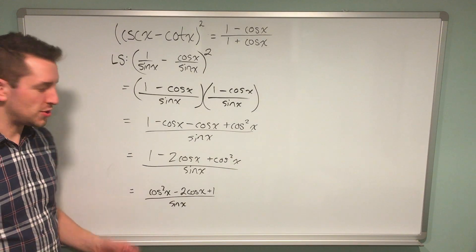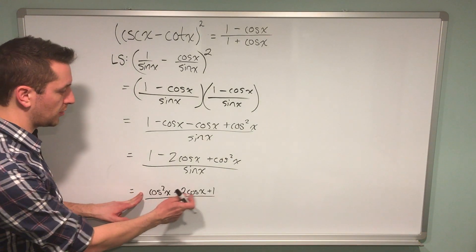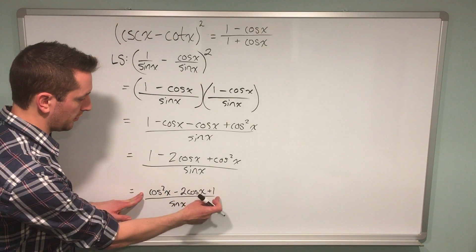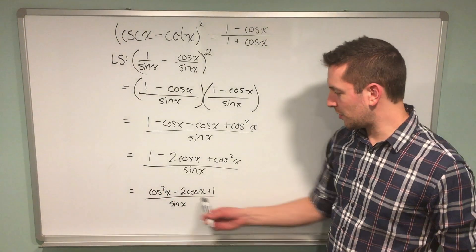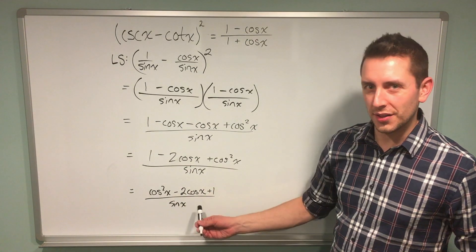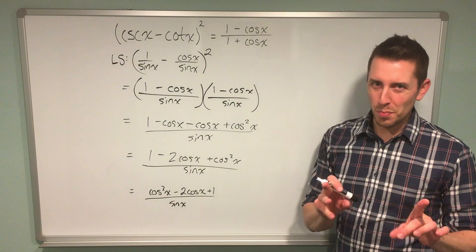I'm going to rearrange the terms in the numerator so the degree on the cosines decrease from 2 to 1 to 0. When I do that, you'll see something interesting happen. This looks like a quadratic expression. If you don't see it, bear with me.